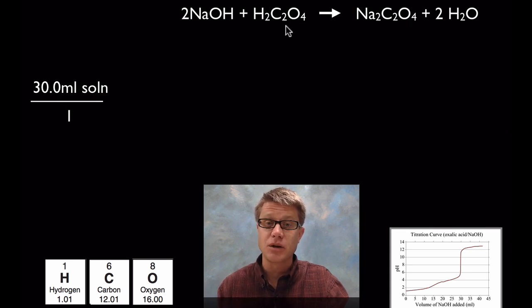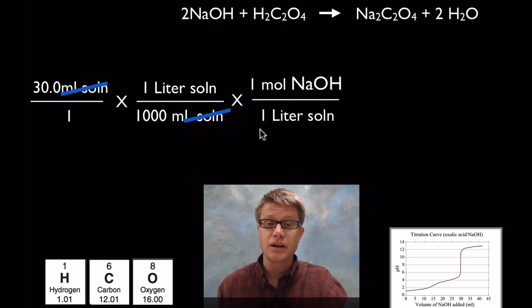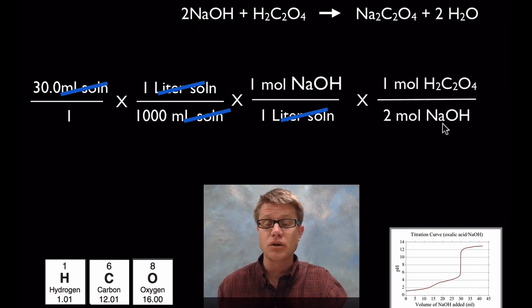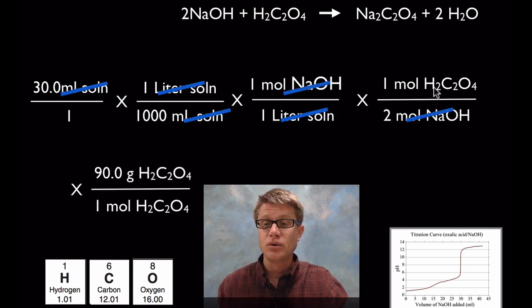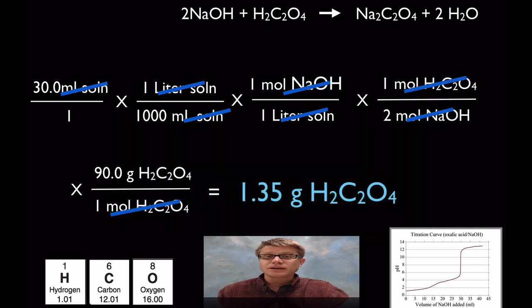So how could we work backwards to find the analyte — the oxalic acid? First, we convert 30 milliliters to liters, because molarity is moles divided by liters of solution. Next, we apply the molarity — 1 mole of sodium hydroxide per liter — giving us the moles of sodium hydroxide. Then we use a mole conversion: put moles of sodium hydroxide on the bottom and moles of oxalic acid on the top. Now we've got moles of oxalic acid. Finally, multiply by the molar mass of oxalic acid — adding up the atomic weights of hydrogen, carbon, and oxygen — and we get the grams of oxalic acid we had to begin with. That's how you do a simple titration to work backwards and find the analyte.